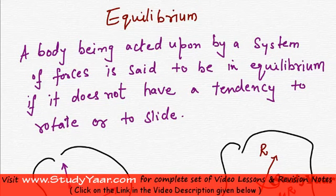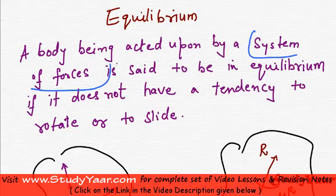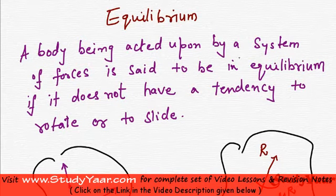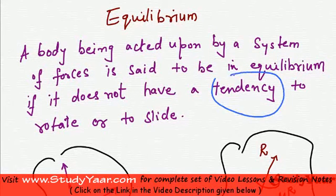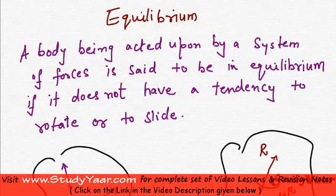Now, let's talk about the equilibrium condition. Let us first define what is an equilibrium. We say that a body which is being acted upon by a system of force is said to be in equilibrium if the body does not have a tendency to either rotate or to slide. So, basically the body is at rest or it's moving with a constant velocity.